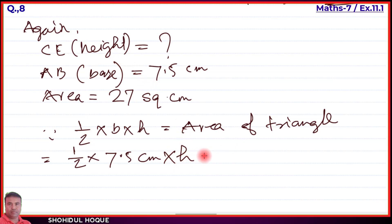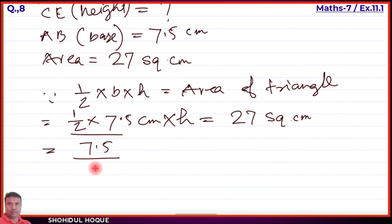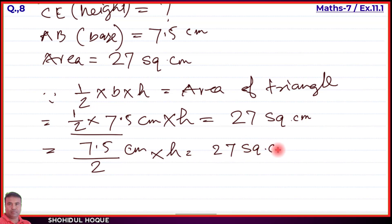We write: half into 7.5 centimeters into CE equals 27 square centimeters. To find CE, we transpose: CE equals 27 square centimeters divided by half into 7.5 centimeters.